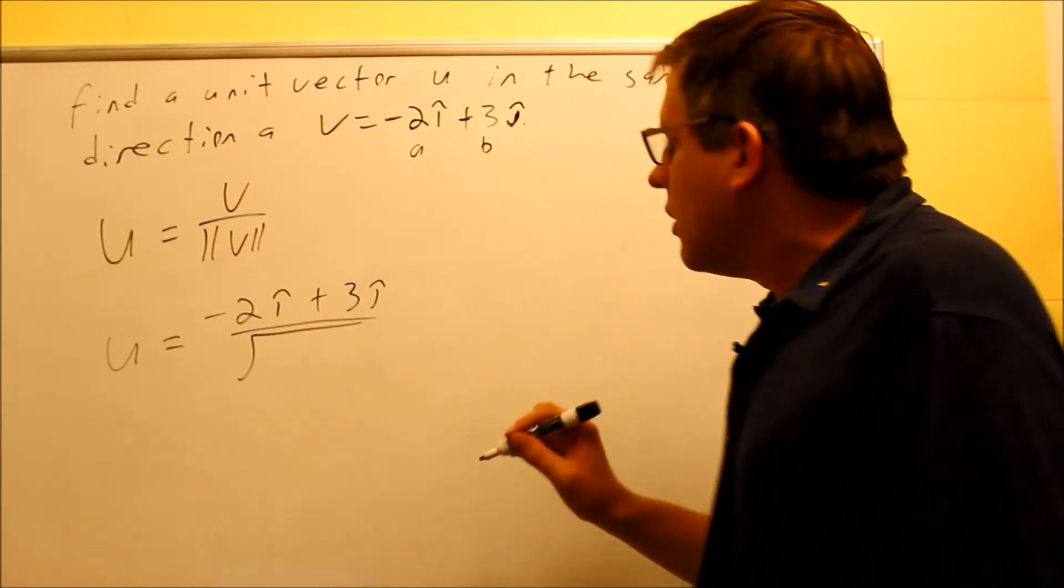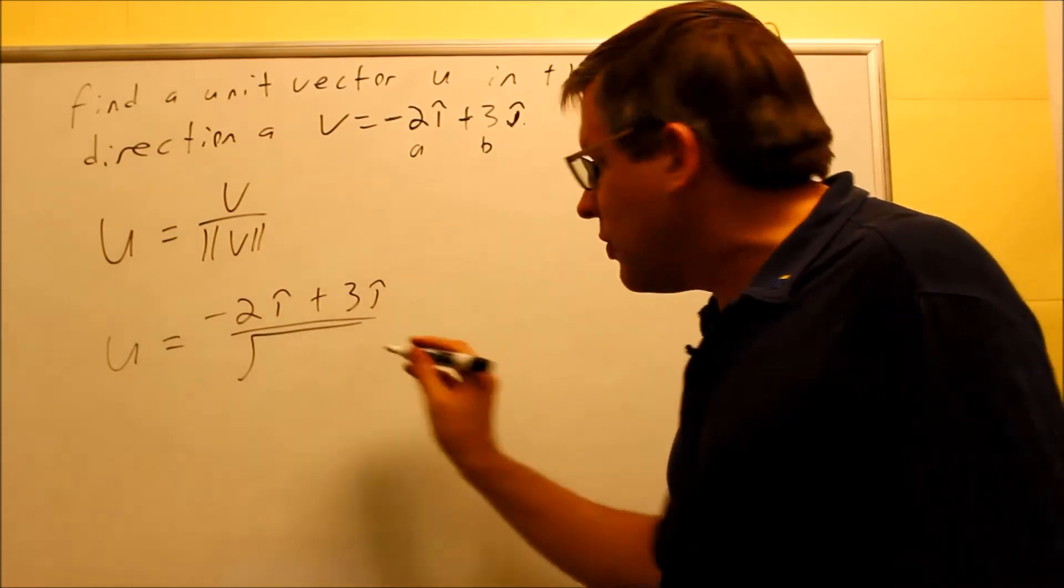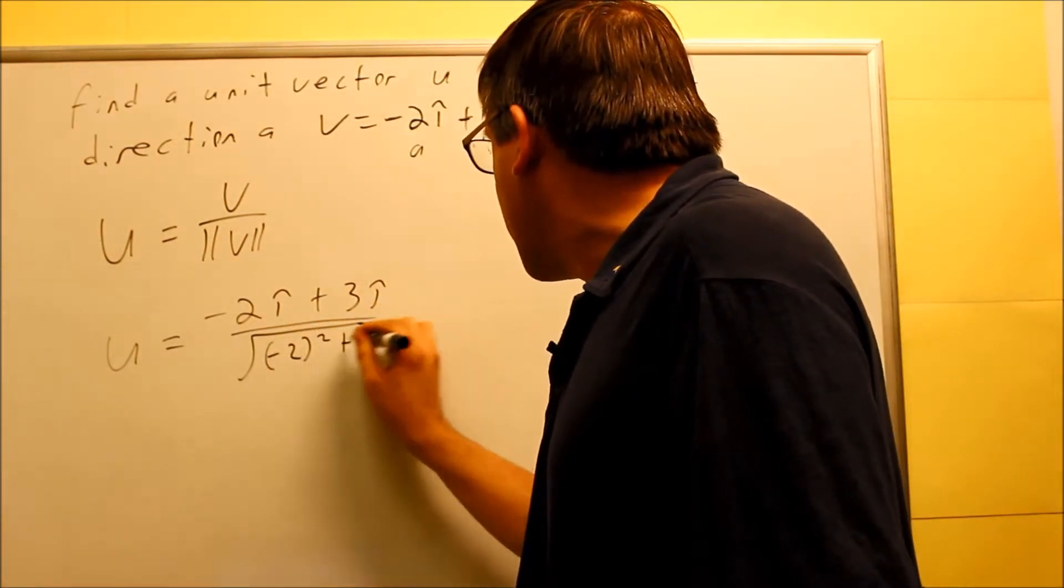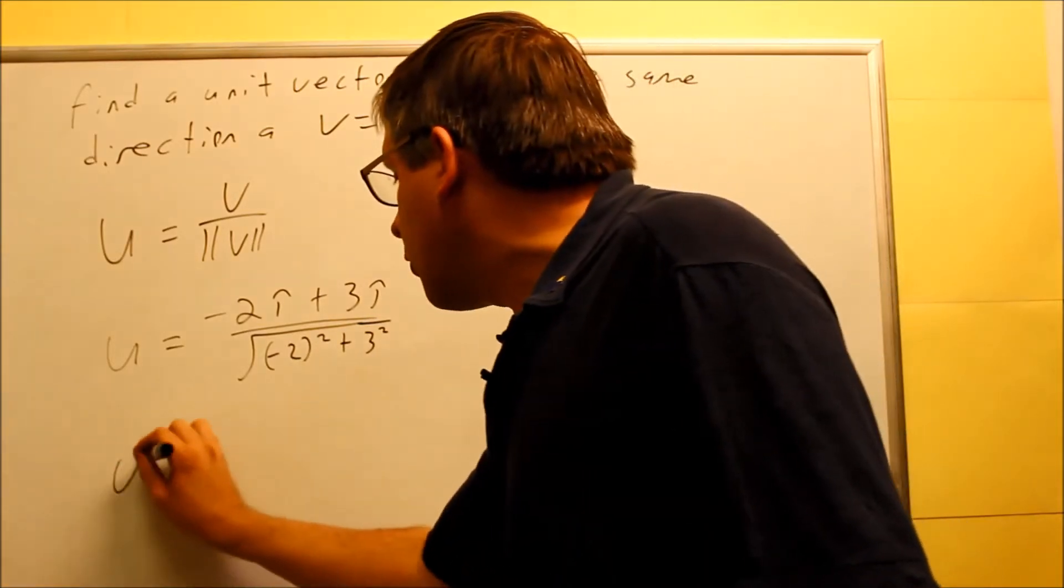We're dividing this by the magnitude of V. So to do that, again, here's your A, here's your B, the square root of A squared plus B squared, negative 2 squared plus 3 squared. And when we do that, again, we're going to break this down.